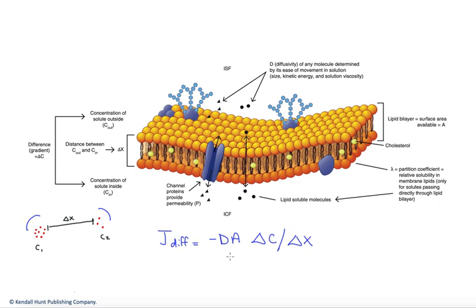And Fick's law basically says that there are certain factors that determine the rate at which something would diffuse. And really, that's the important part: what are those factors and how do those factors affect that rate of diffusion?